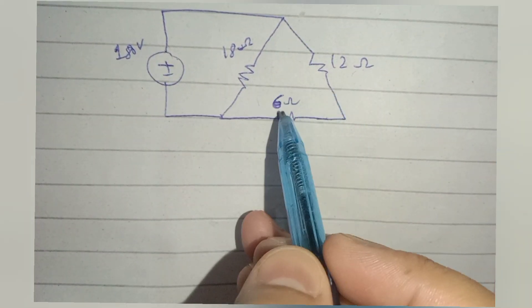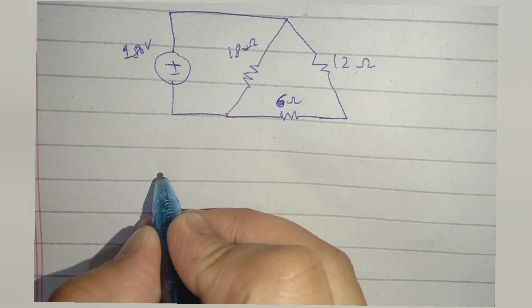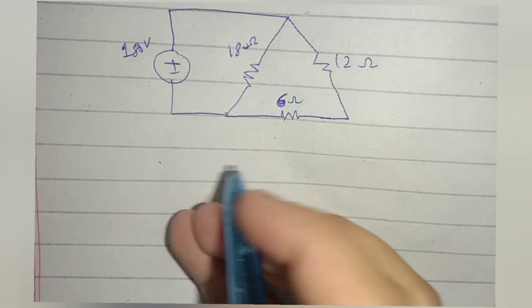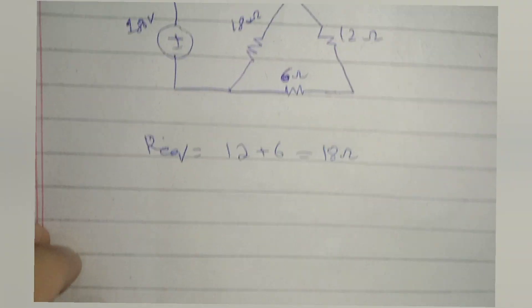The 12 ohm and 6 ohm resistors are connected in series. Therefore, their equivalent is the algebraic sum of 6 and 12, which is 18 ohms. This 18 ohm resistor is in parallel with the existing 18 ohm resistor. No need to further solve for equivalent resistance.